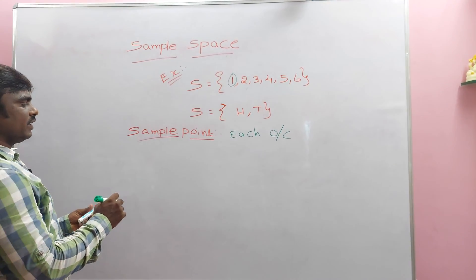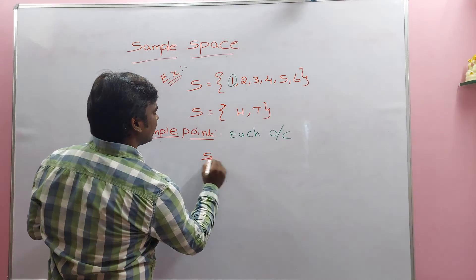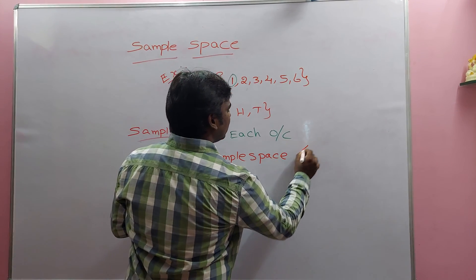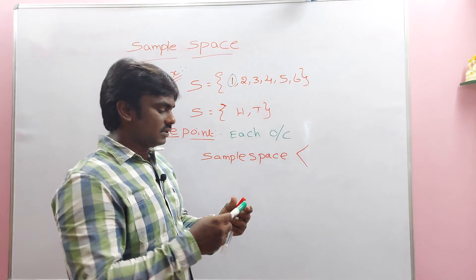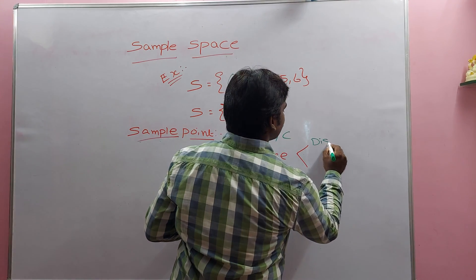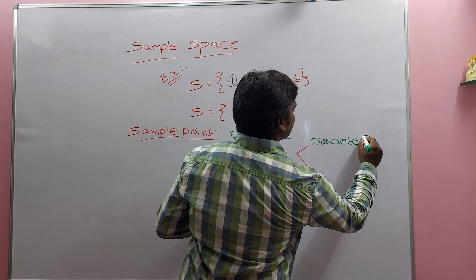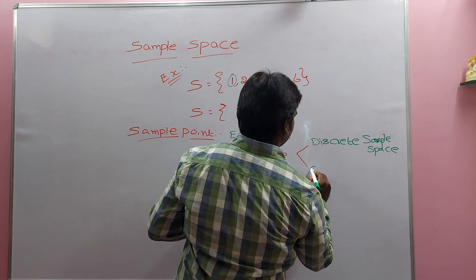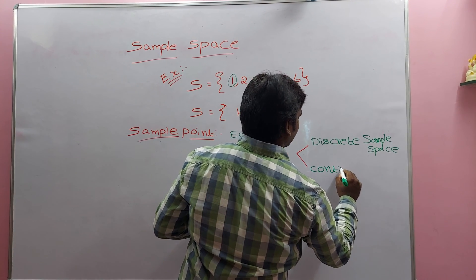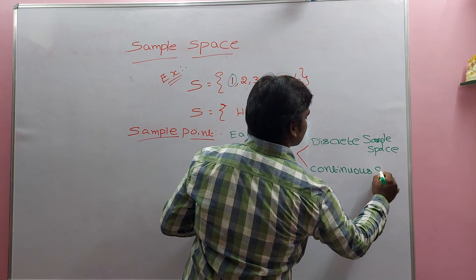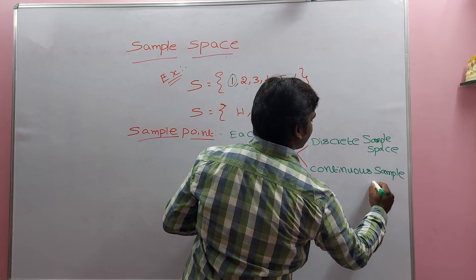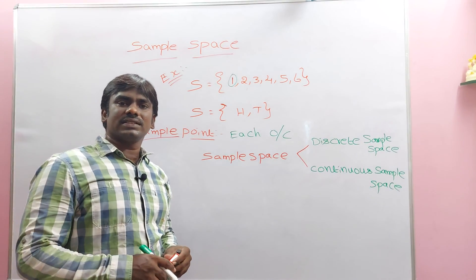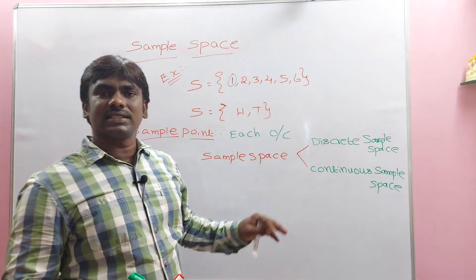Sample space is divided into two types: the first one is discrete sample space, and the second one is continuous sample space.